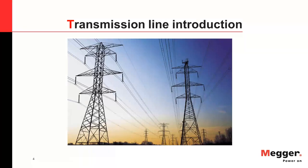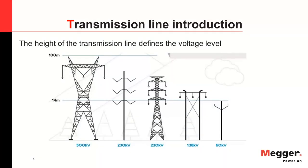We see transmission lines in highways and substations, but now we are talking about understanding them — whether it's a 400 kV or 60 kV line. That is defined by two things: the height of the tower and the insulators used. On a 400 kV or 500 kV line, you see a big insulator, while 60 kV uses a very small insulator. So the height of the tower and the insulators used to carry the conductors define the voltage level.